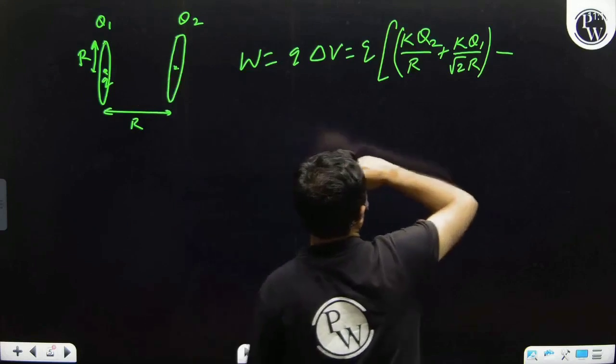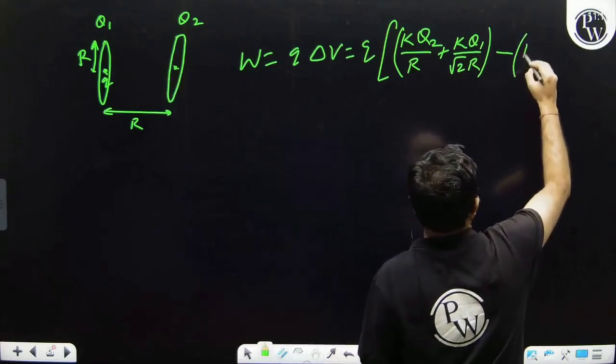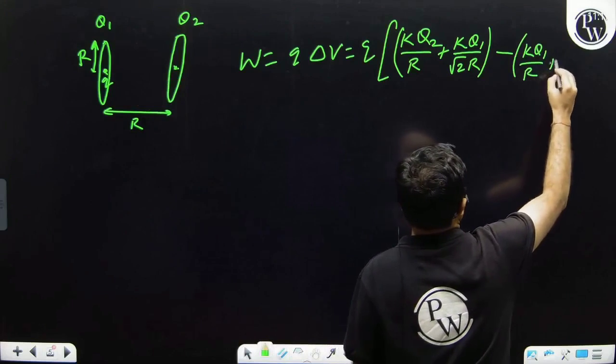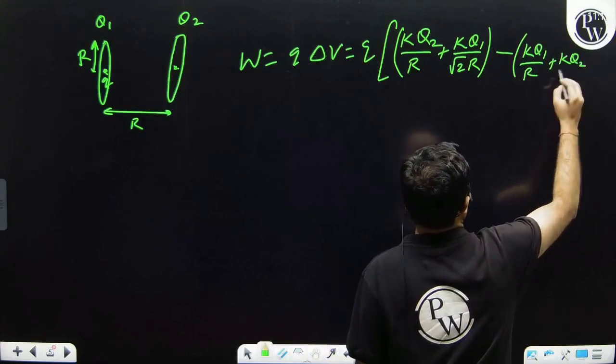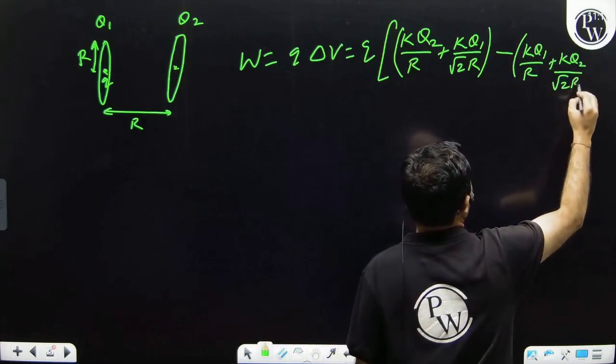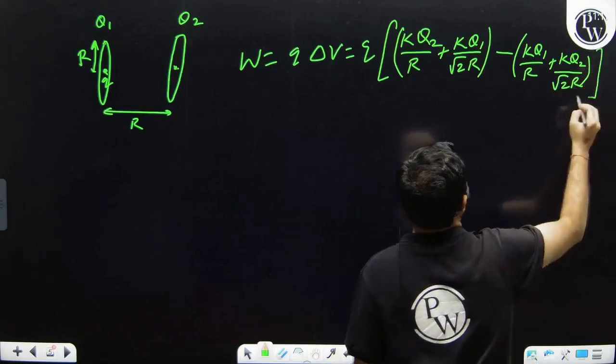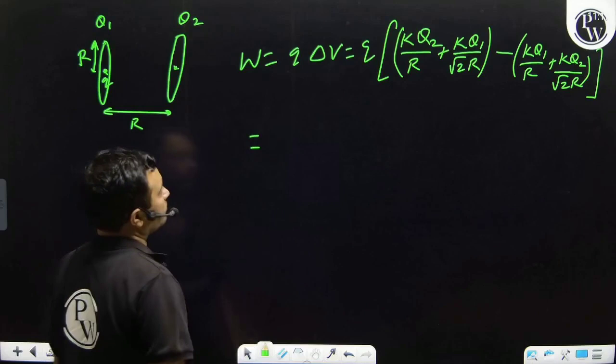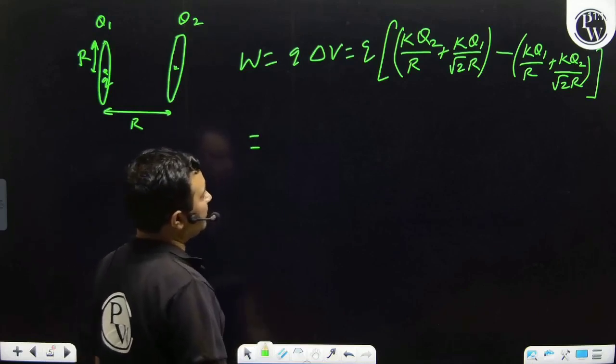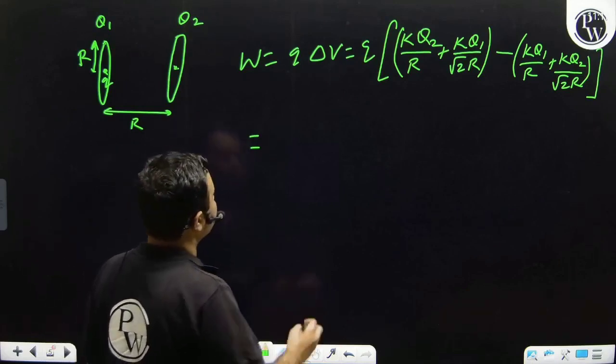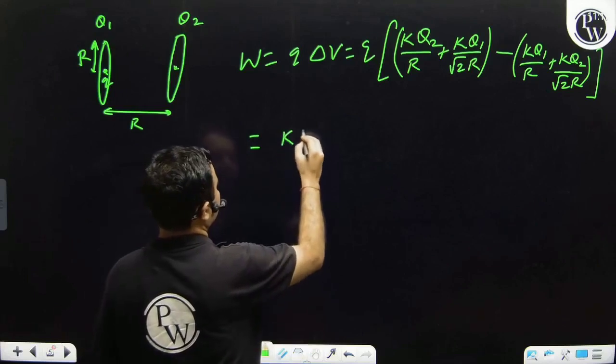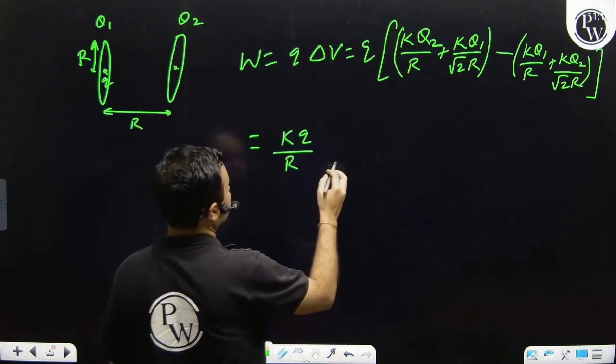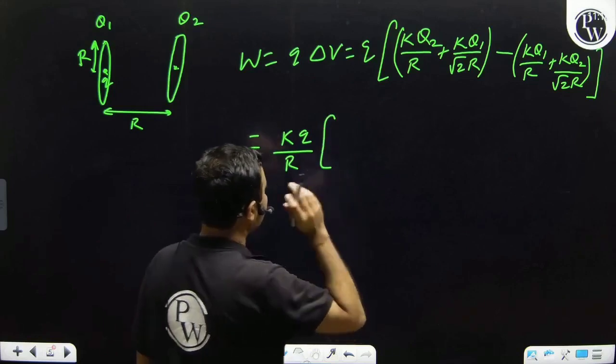Minus now we have to write potential at this ring, so this would be K Q1 by R plus K Q2 upon root 2 R. So we can simplify this as small q upon R.